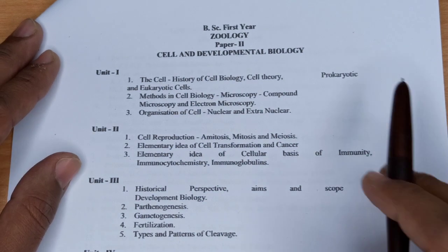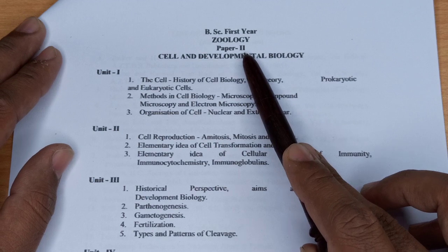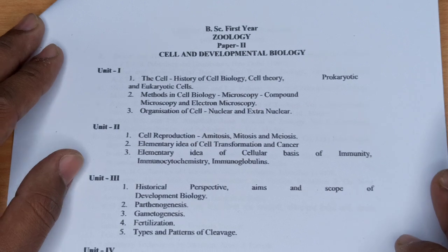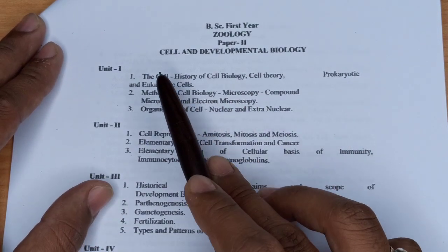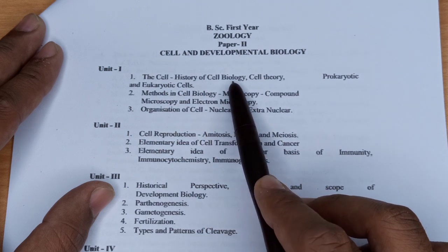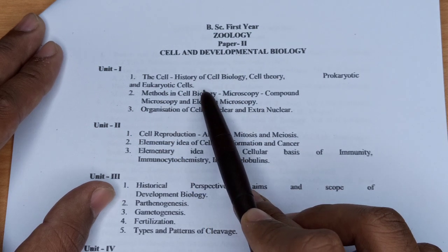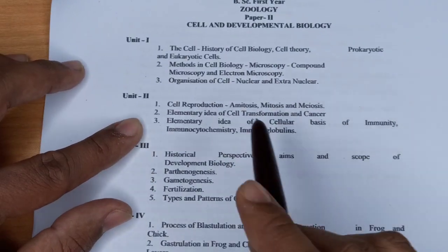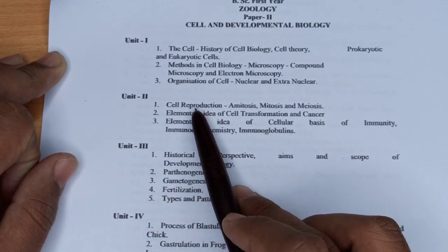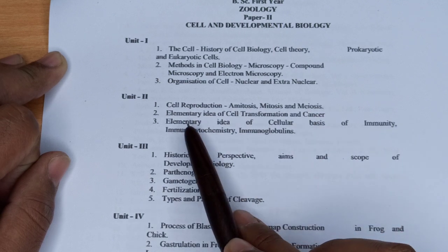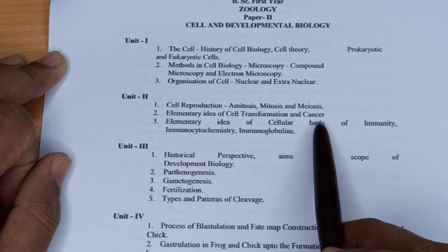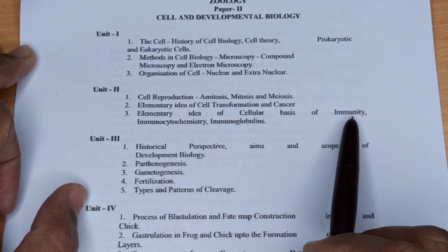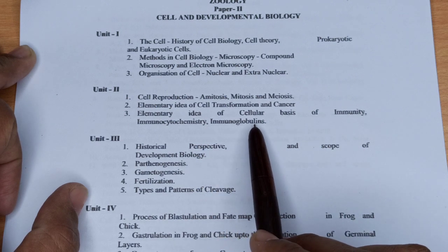अब BSC First Year Zoology Paper No. 2 का syllabus देखते हैं जो Cell and Developmental Biology पर है। Unit 1 में The Cell, history of cell biology, cell theory, eukaryotic cells, methods in cell biology और organization of cell हैं। Unit 2 में cell reproduction: amitosis, mitosis और meiosis, साथ ही elementary idea of cell transformation and cancer है।